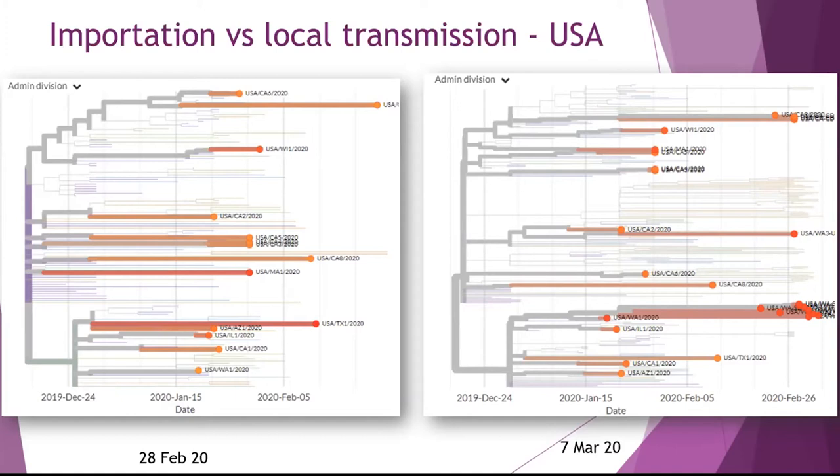You can imagine how telling these two things apart can be important for public health interventions. What you might do if most of your cases are being imported might change if you realize the virus is now spreading locally. Unfortunately this didn't amount to much public health change in the US at the time, but in theory this can be a really important indication about what might be the most useful interventions and where the virus is starting to spread locally.